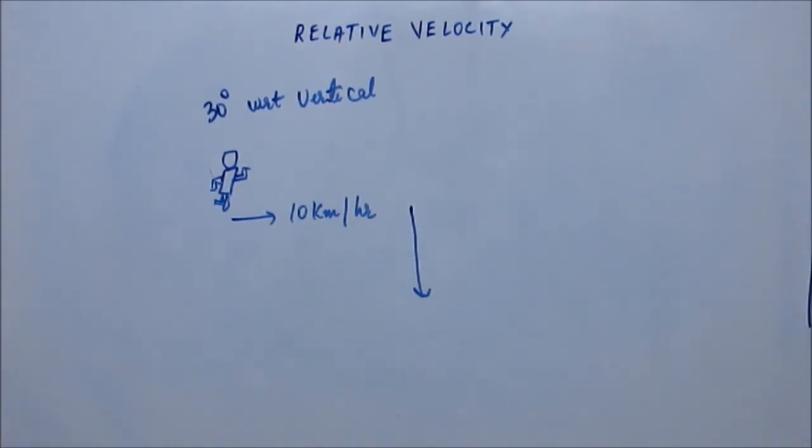So the question is: what is the velocity with which rain is coming down? The actual velocity with respect to ground and not with respect to observer. What is the velocity with respect to ground that the rain is actually coming down?